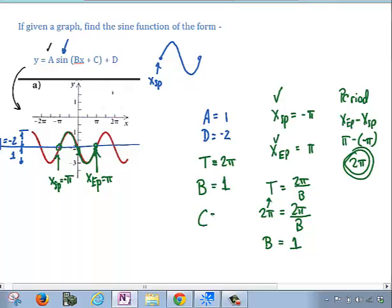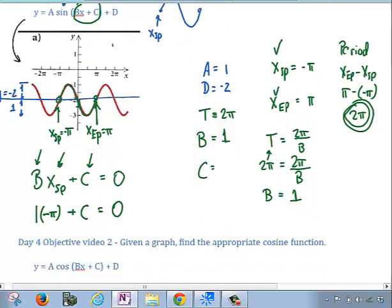The last thing is to find the c value. So, in order to find the c value, you need to remember that the starting point in this equation right here, b times the starting point plus c had to equal 0. So, we know what the starting point was, we know what the b value is, so we just plug those values in, and we solve for the c value. So, the b value was 1, the starting point was negative pi. The c value is unknown, but we're going to solve for that, and when we solve for that, we get c is equal to pi.